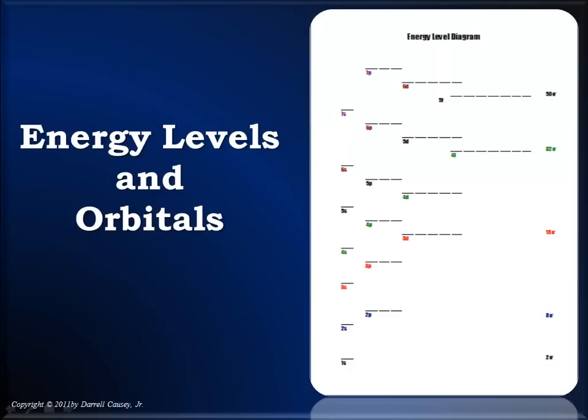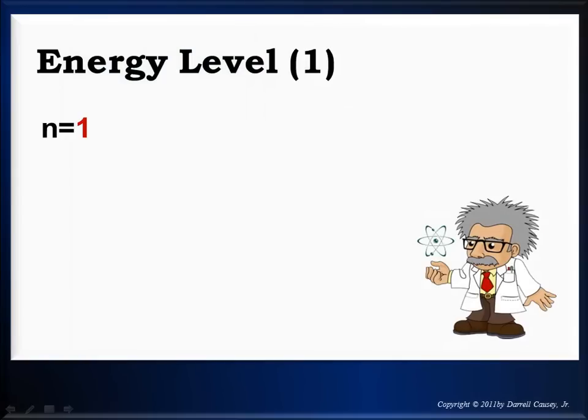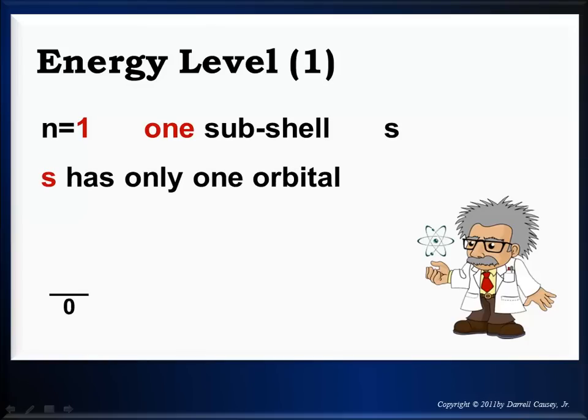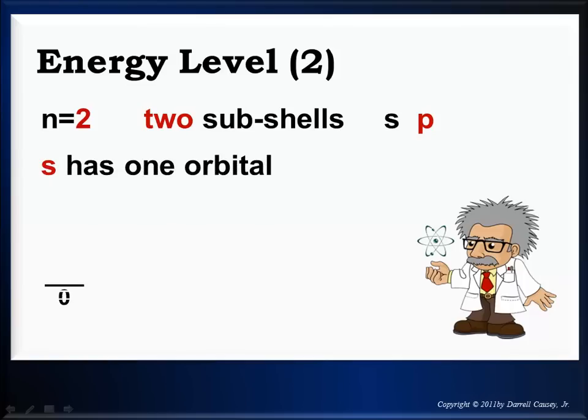Alright, let's understand energy levels and their orbitals. Energy level number 1 has 1 subshell which is s, and s only has 1 orbital. There's the energy level. Energy level 2 has 2 subshells, s and p. So s has 1 orbital and p has 3 orbitals. Now notice also that I'm putting below the orbitals, I'm also putting their m sub l or the third quantum number value to help reinforce that.